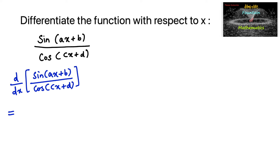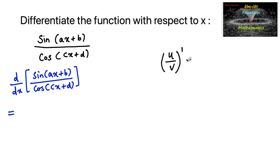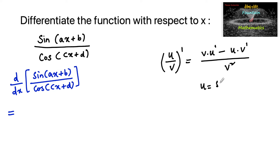Since we know the quotient rule, for a u/v function, the differentiation is: upon v squared, v into d/dx of u minus u into d/dx of v. Here u is equal to sin(ax + b) and v is equal to cos(cx + d).